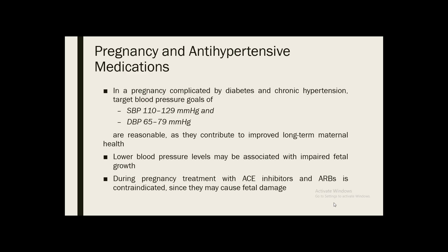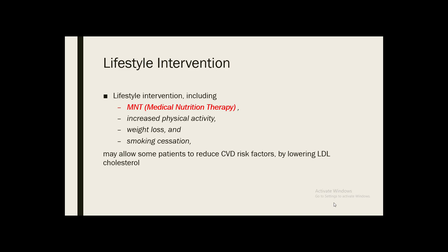When a pregnant woman is complicated by diabetes or hypertension, the goal is to lower and maintain blood pressure at at least 130 by 80. The use of ACE inhibitors and related drugs during pregnancy is not recommended. Lifestyle interventions focus on medical nutrition therapy, increased physical activity, weight loss, and smoking cessation.